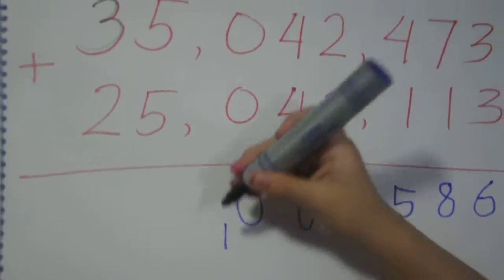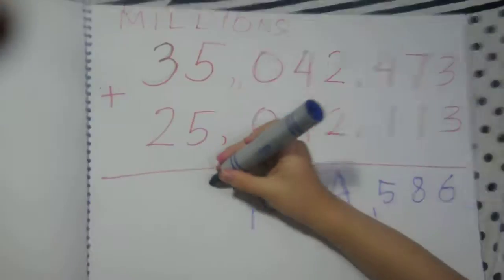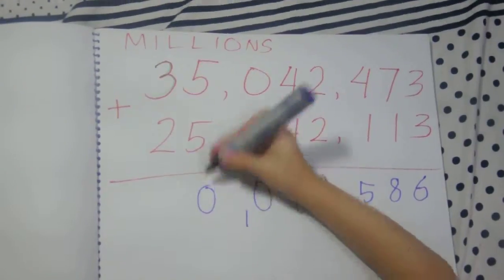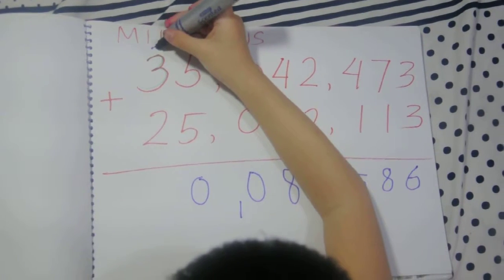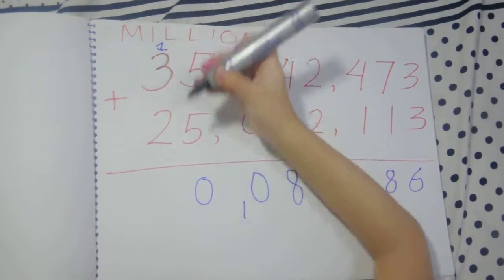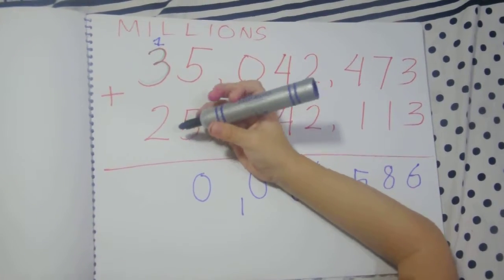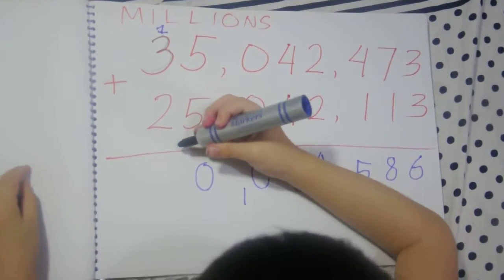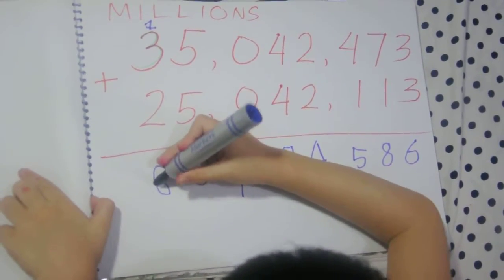Then comma, we will put 0. Carry 1. And the next is that we will put that.